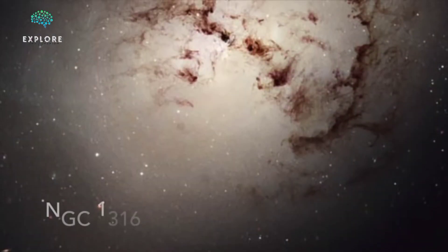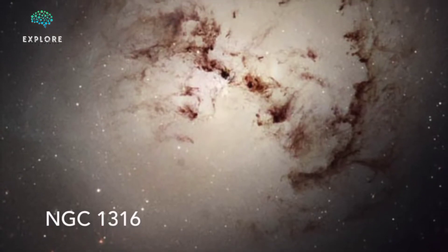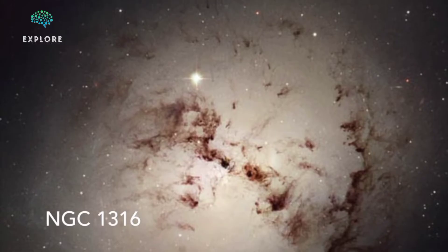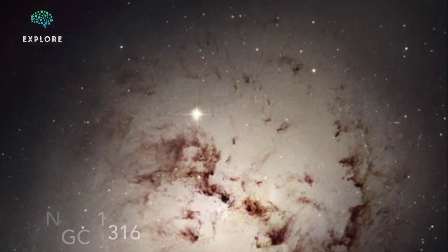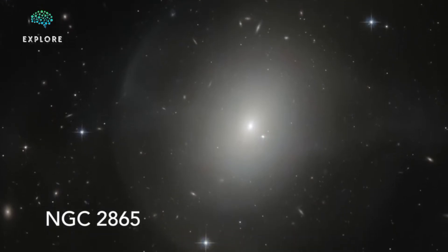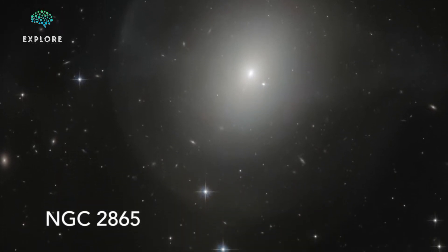Elliptical galaxies contain mostly older stars. That means they often aren't as bright as spiral galaxies. They also have very little dust and gas. Elliptical galaxies are the largest and most common galaxies observed. They make up about 20% of nearby galaxies.